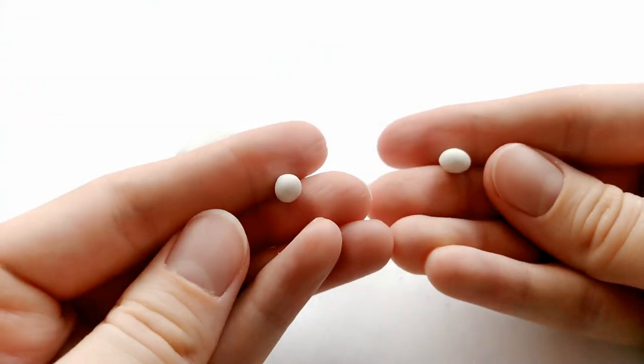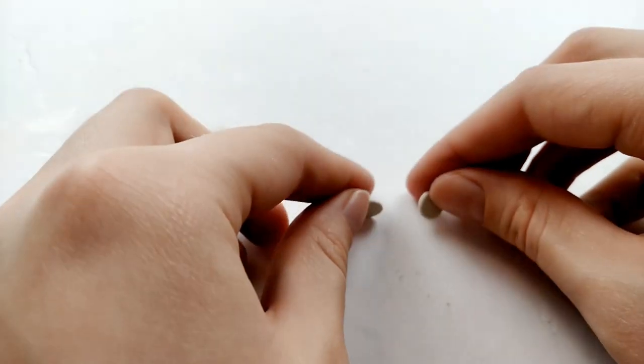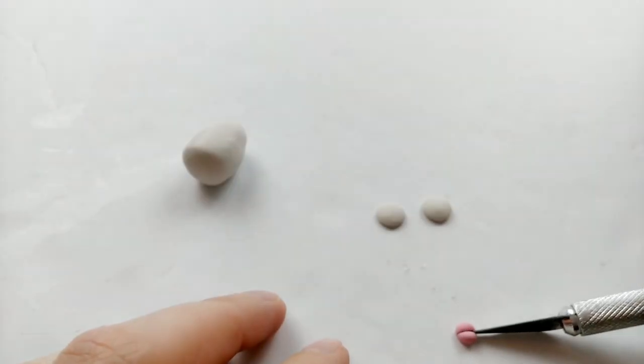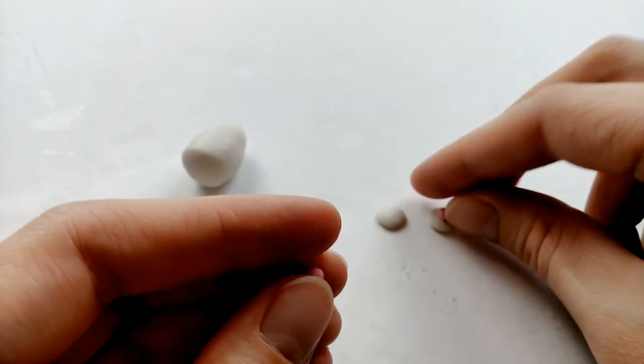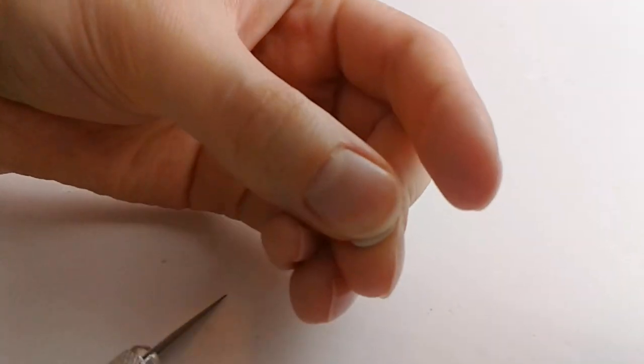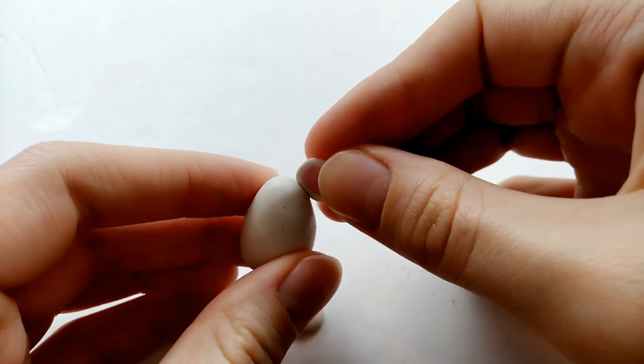Next, we're going to take two small white balls and flatten them out and those will be the mouse's ears. We're also going to take a ball of pink clay, split it into two, roll it into two smaller balls and flatten them out onto the ear. Then just place them on top of the mouse's head.